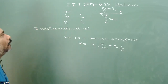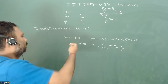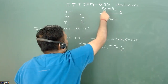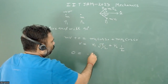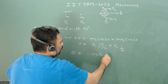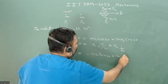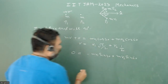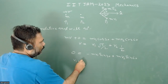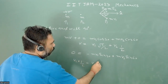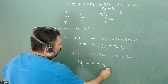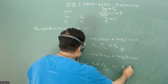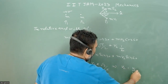For the y-direction, the initial momentum is zero. So: 0 = MV₁ sin30° − MV₂ sin60°. From here we get V₁·(1/2) = V₂·(√3/2), which gives us V₂ = V₁/√3.